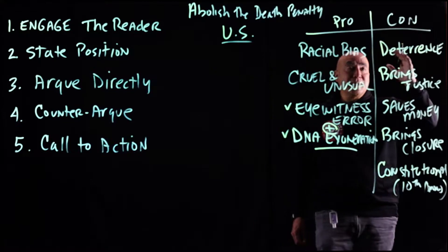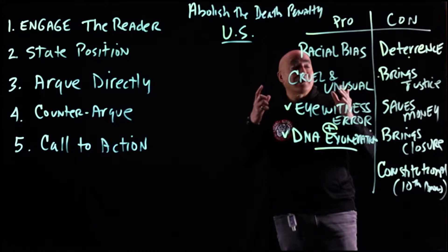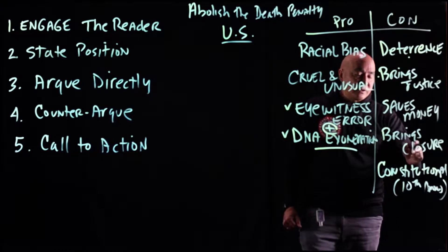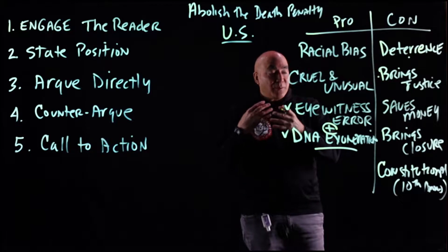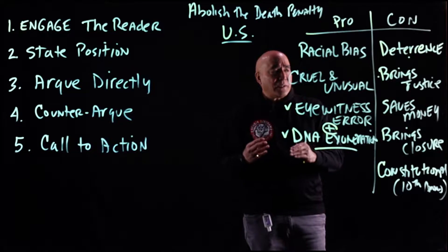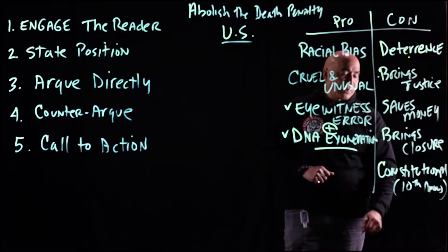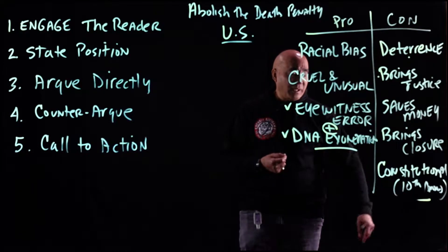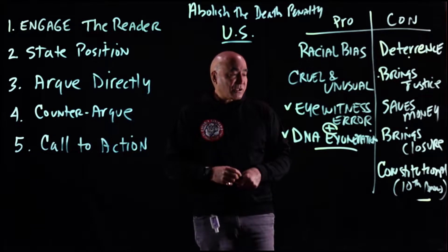Reasons to keep the death penalty include: deterrence, brings justice — usually framed as an eye for an eye, a sense of equal treatment — saves money, and brings closure, typically to the victim's family so they can heal or resolve their trauma, or to society. Brings closure is not the same as brings justice. The justice argument states that if you kill somebody, you should be killed. Also, constitutional — attorney generals or governors in states that still have the death penalty typically cite the Tenth Amendment of the Bill of Rights, arguing it's states' rights and up to the state to decide in their jurisdiction.